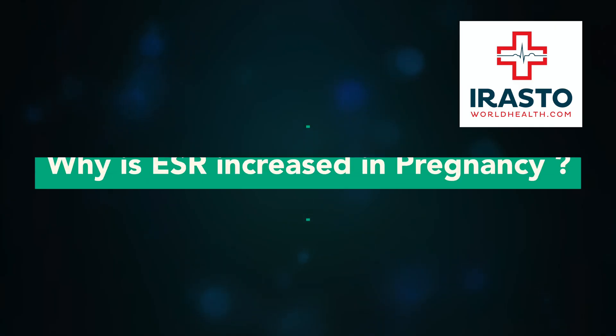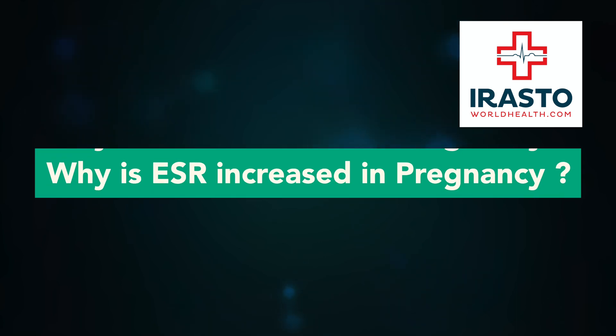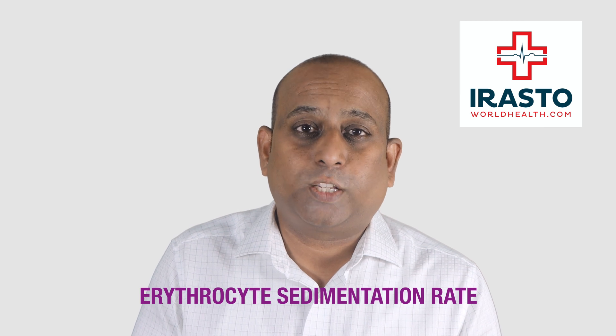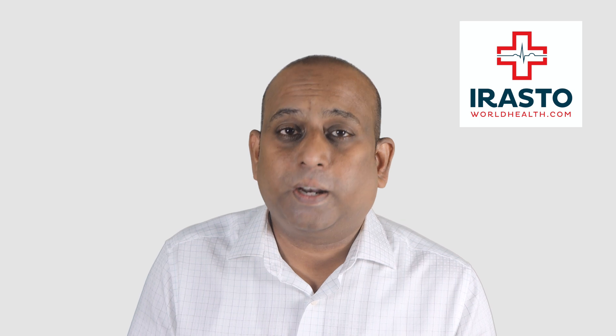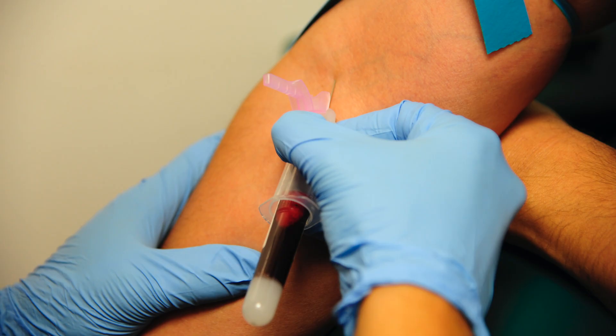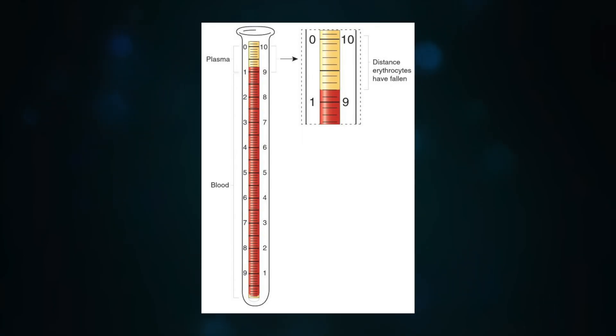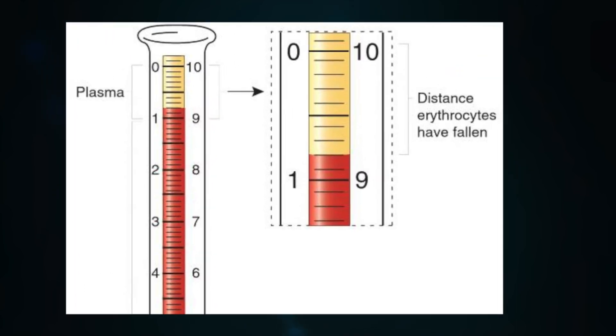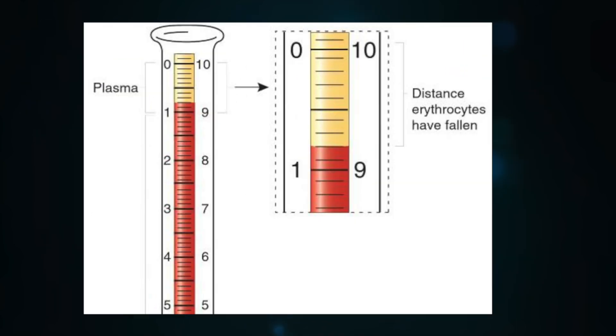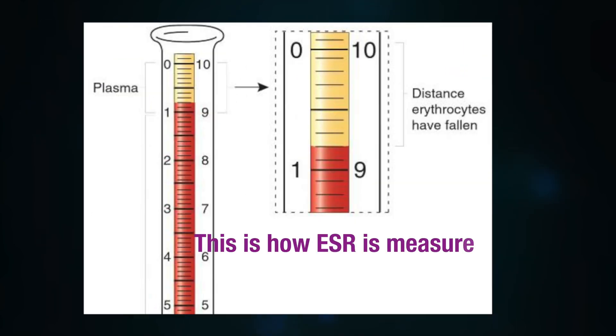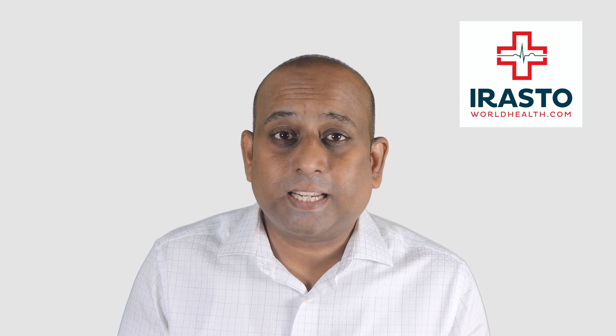Hello, I'm Dr. Jimmy Douglas. Today we'll see why ESR is increased in pregnancy. ESR, or erythrocyte sedimentation rate, is the rate at which erythrocytes or RBCs settle down. Normally, erythrocytes remain suspended uniformly in blood, but when blood is taken from a vein, mixed with an anticoagulant, and allowed to stand in a vertical tube, the red blood cells settle down due to gravity, with a clear layer of plasma on top.